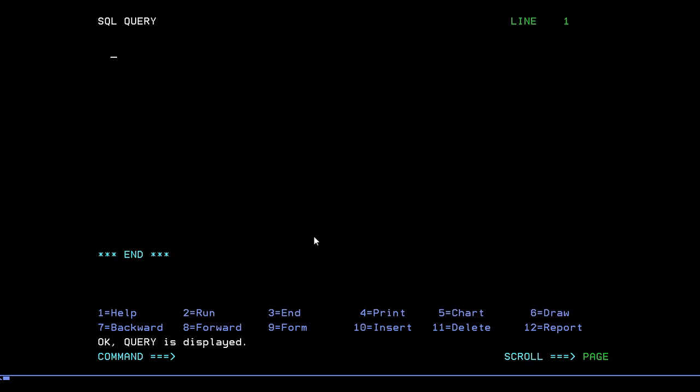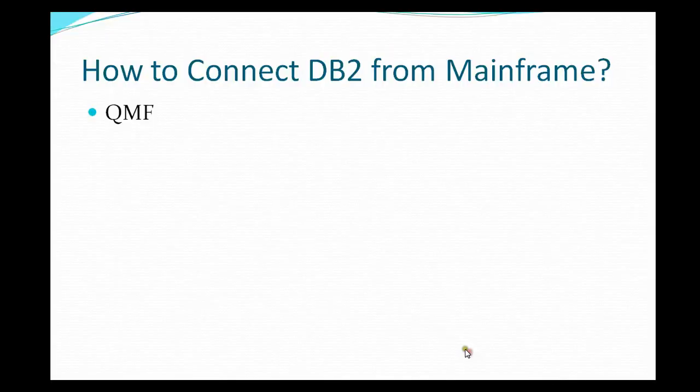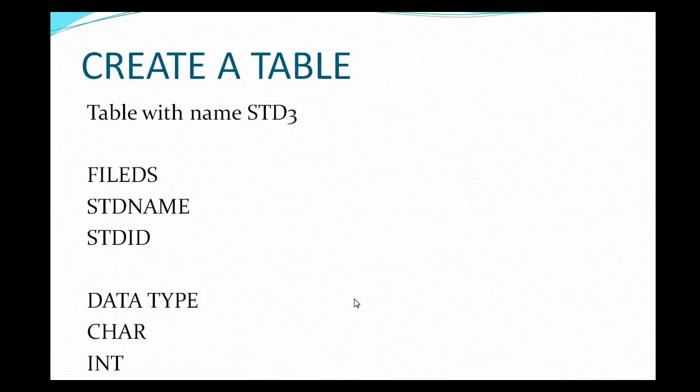You can see various options like List, Show, Chart, Query, and more. We mostly need to work with the Query option. Press F6 on the keyboard to enter the SQL Query panel area where you can start entering your queries. This is how we connect to DB2 from a mainframe with the help of QMF.